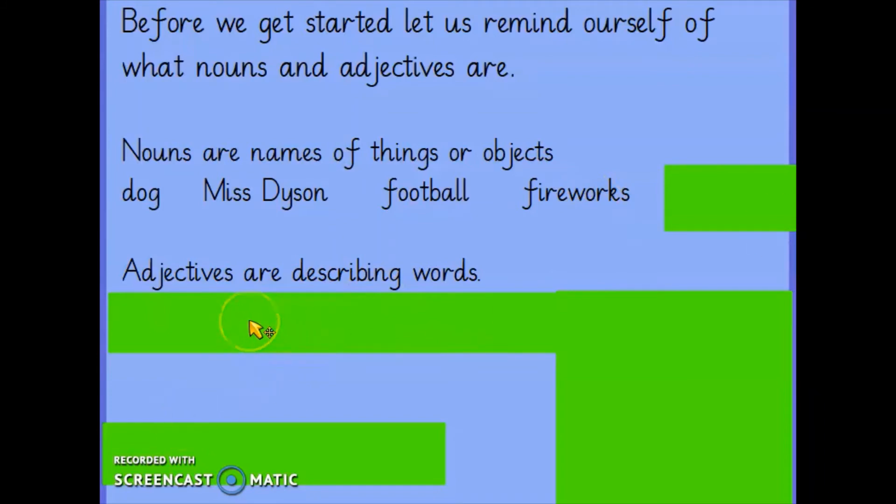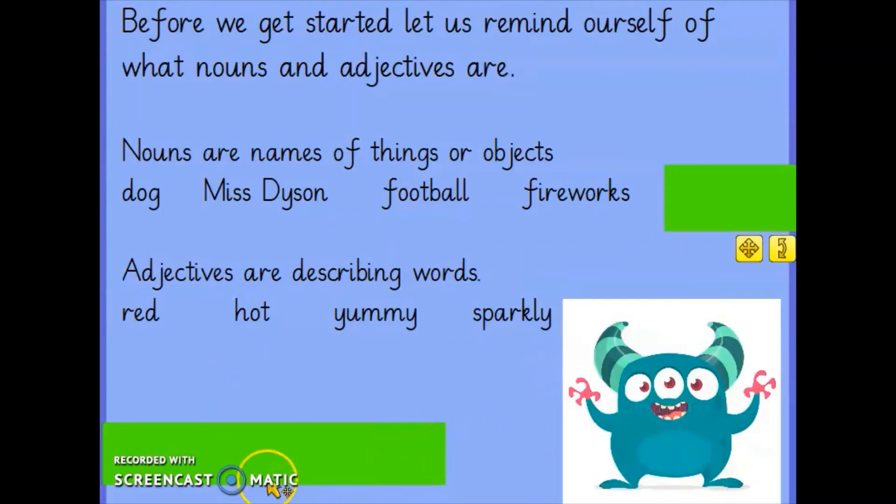Adjectives are describing words. Let's look at some examples. Red. You can describe something as red, such as the red van. You can have hot to describe the hot weather. Yummy. You can describe something as yummy, such as my dinner is yummy. And last but not least, sparkly. You might describe something as sparkly, like the glitter which is a noun. The glitter is sparkly. Now I've got a little picture here of a little monster and I want you to pause the video and see if you can think of any adjectives to describe him.